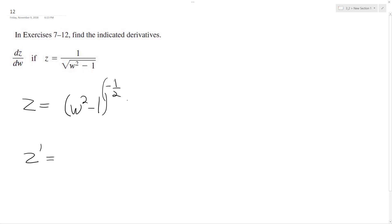So z prime is going to be equal to pull down the negative 1 half. And then we get w squared minus 1. And then negative 1 half subtract 1 from it. You end up with negative 3 halves. And then the derivative of what's on the inside here, which is 2w. That's from the chain rule.